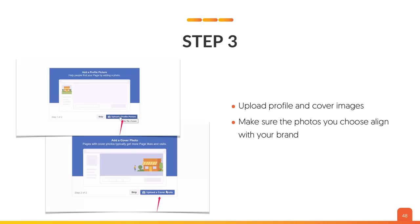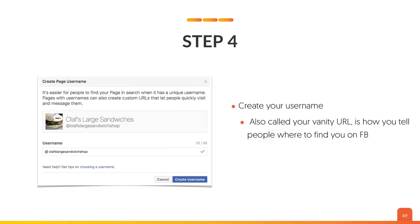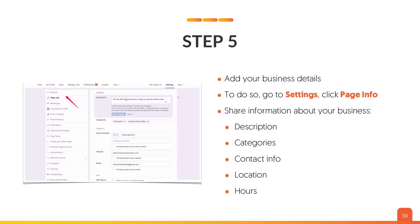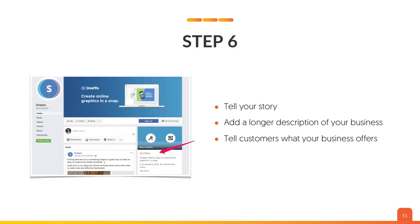For the category, type a word or two that describes your business and Facebook will offer suggested options — click one of those. Step three: upload your profile and cover image, making sure those photos align with your brand. Step four: create your username, also called your vanity URL, so people can easily find you on Facebook. Step five: add your business details by going to Settings, then Page Info, and share information about your business — your category, contact information, hours, and location. For the next step, tell your story. Stories are the age-old marketing technique that's been around for thousands of years. Add a longer description to your business to help people find you when searching on Facebook, and tell customers what your business has to offer.